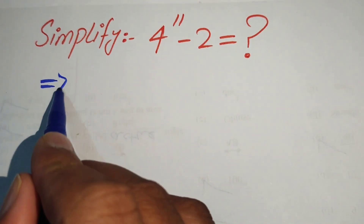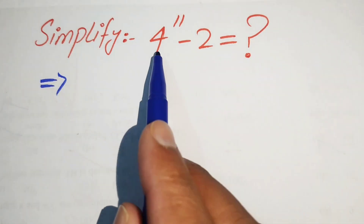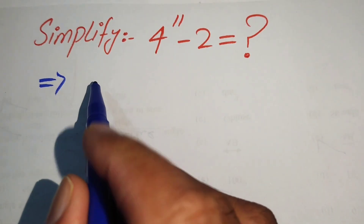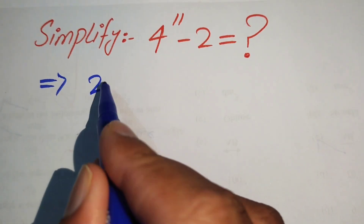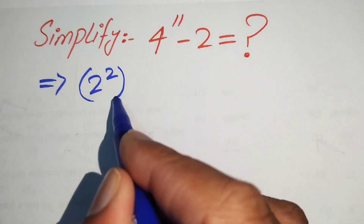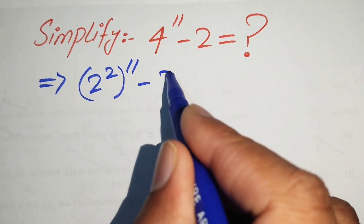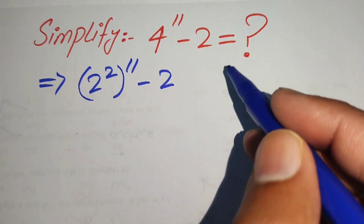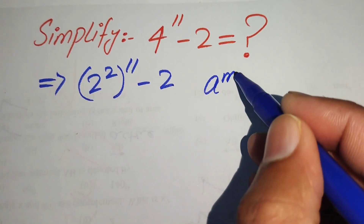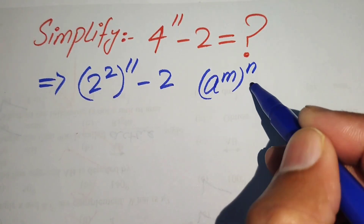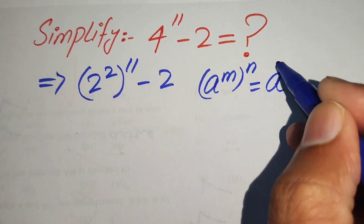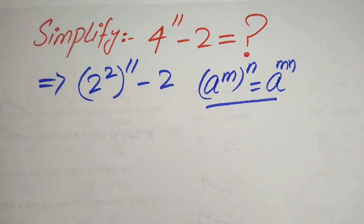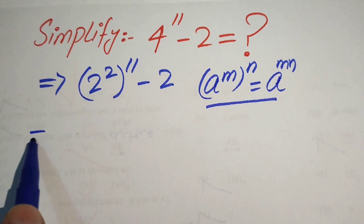First, we rewrite this algebraic expression — the base is 4, and we write our base as 2 squared with its exponent as 11 minus 2. We use the exponential law: if we have a to the power of m, to the power of n, it equals a to the power of m times n. We apply this law on the first term.